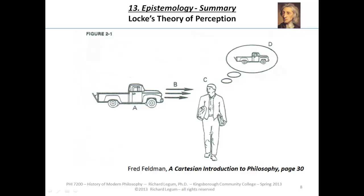Locke's theory of perception is very close to our everyday understanding about what's going on in standard cases of perception — seeing, hearing, tasting, smelling, anything through the five senses, feeling. And the diagram that we see, due to Fred Feldman, kind of explains the concept of Locke's theory of perception.